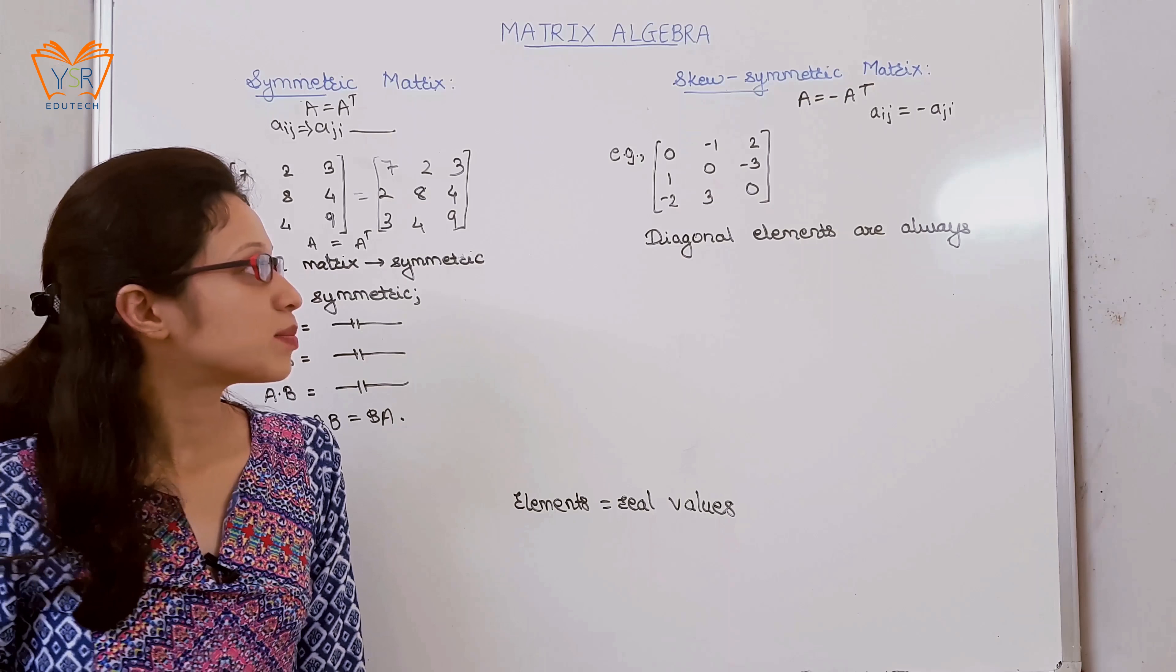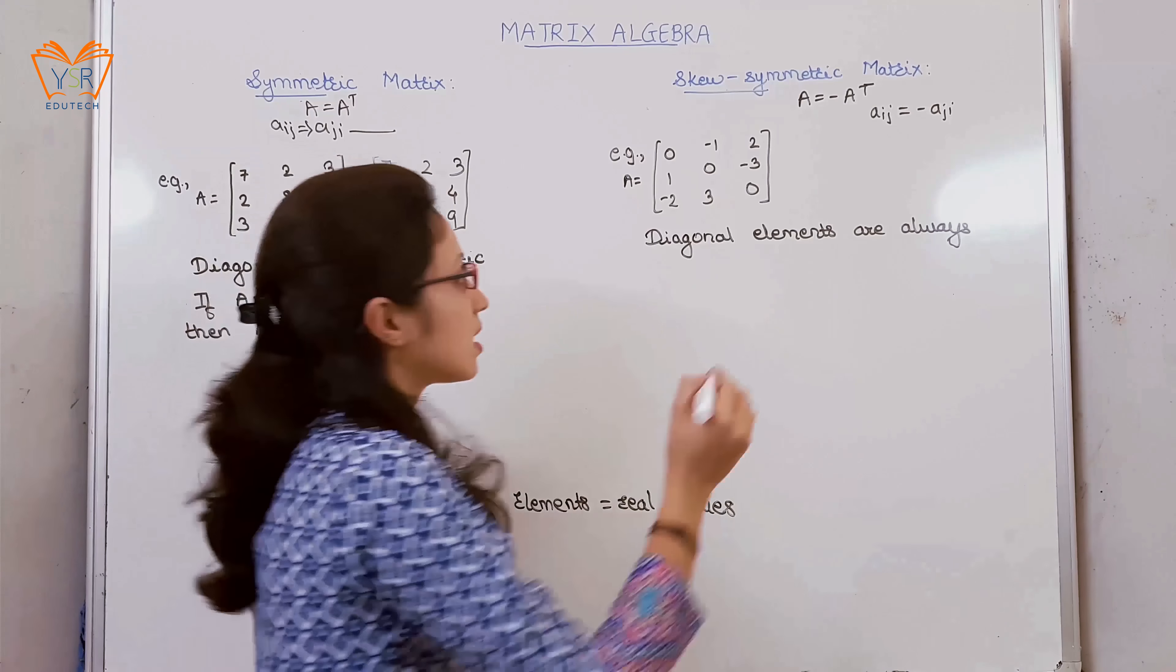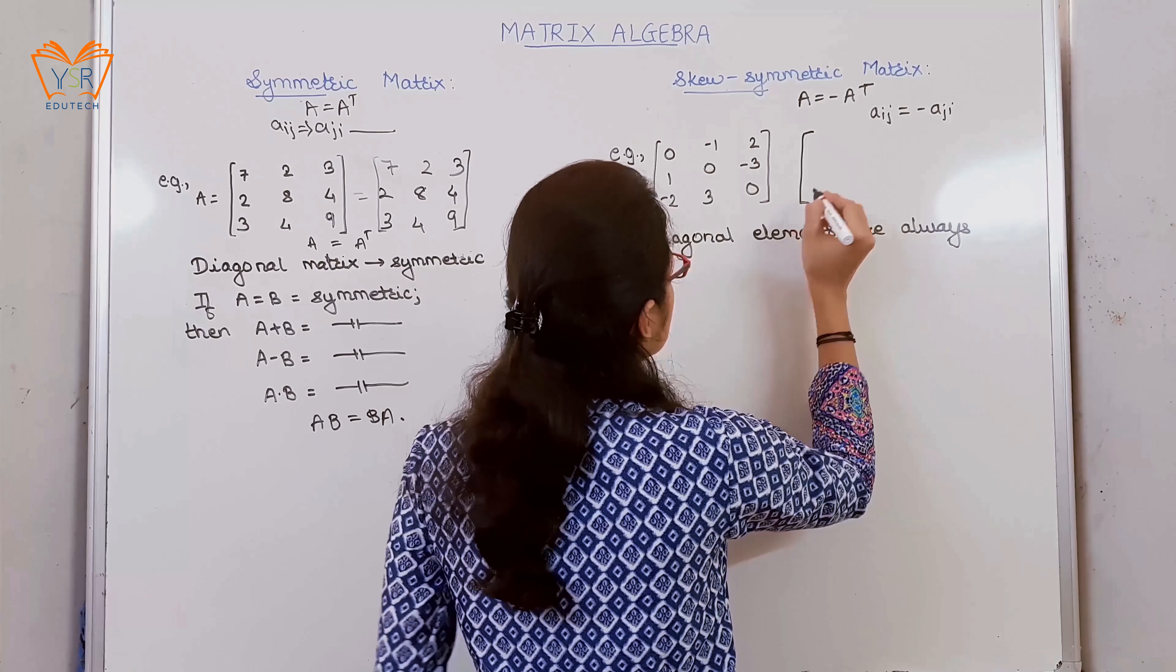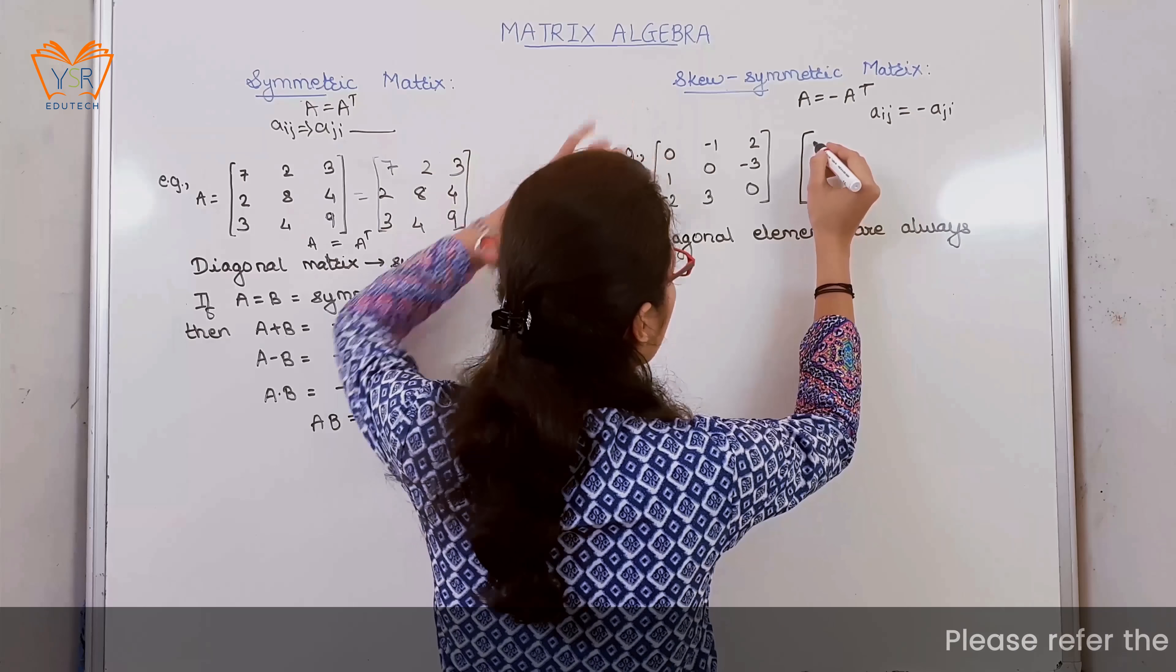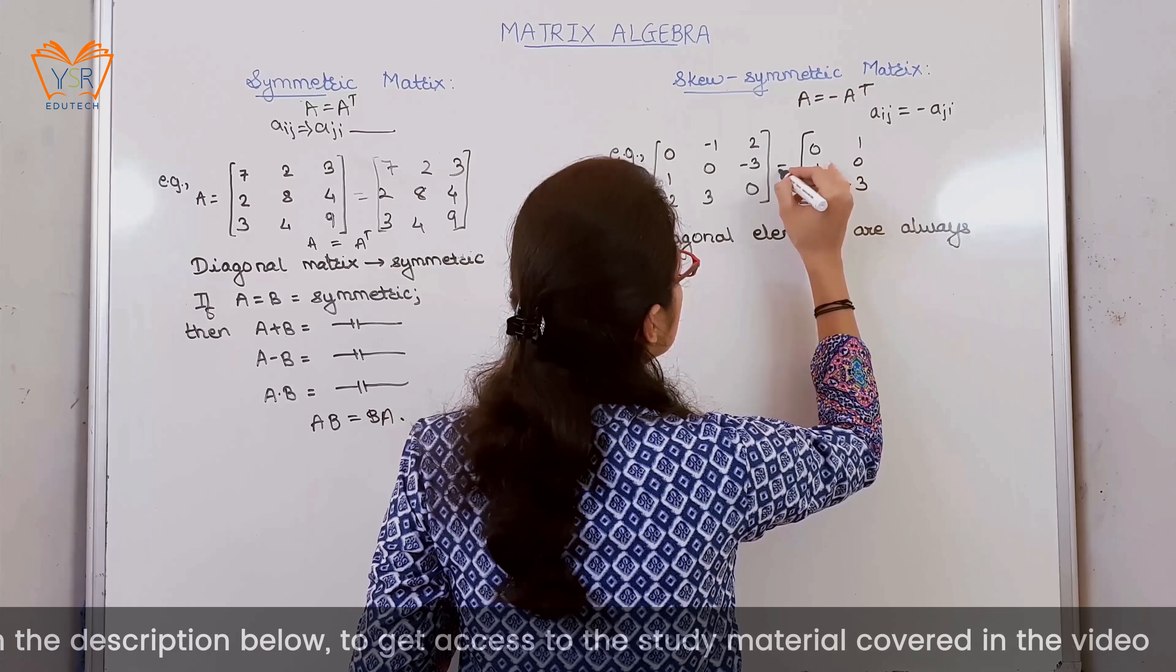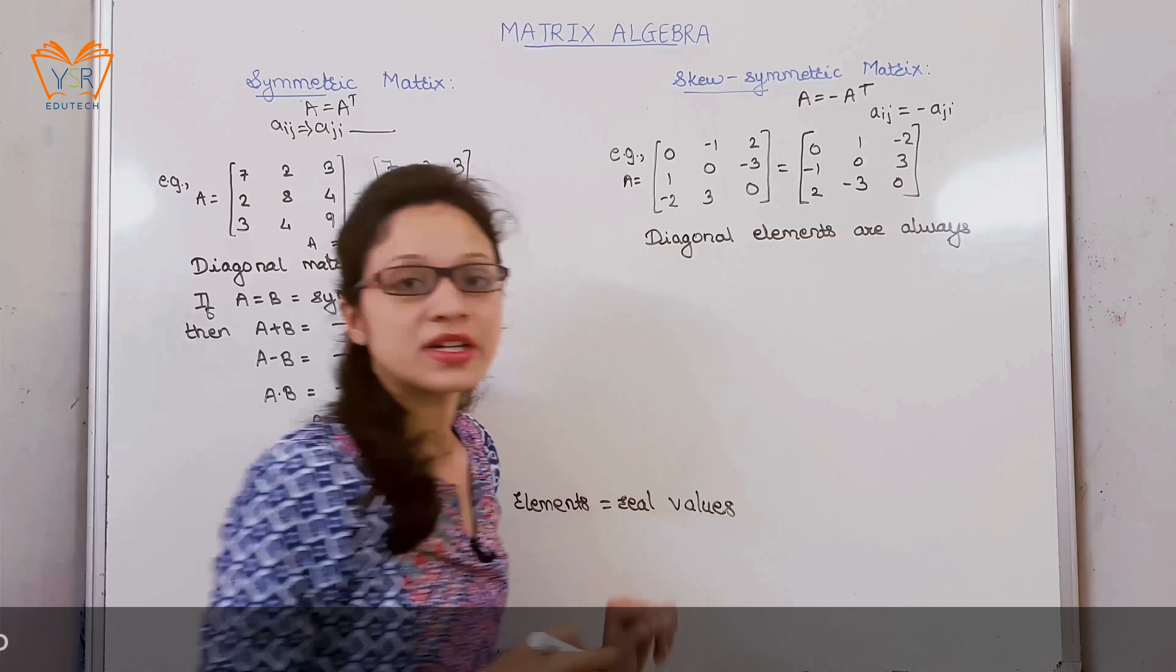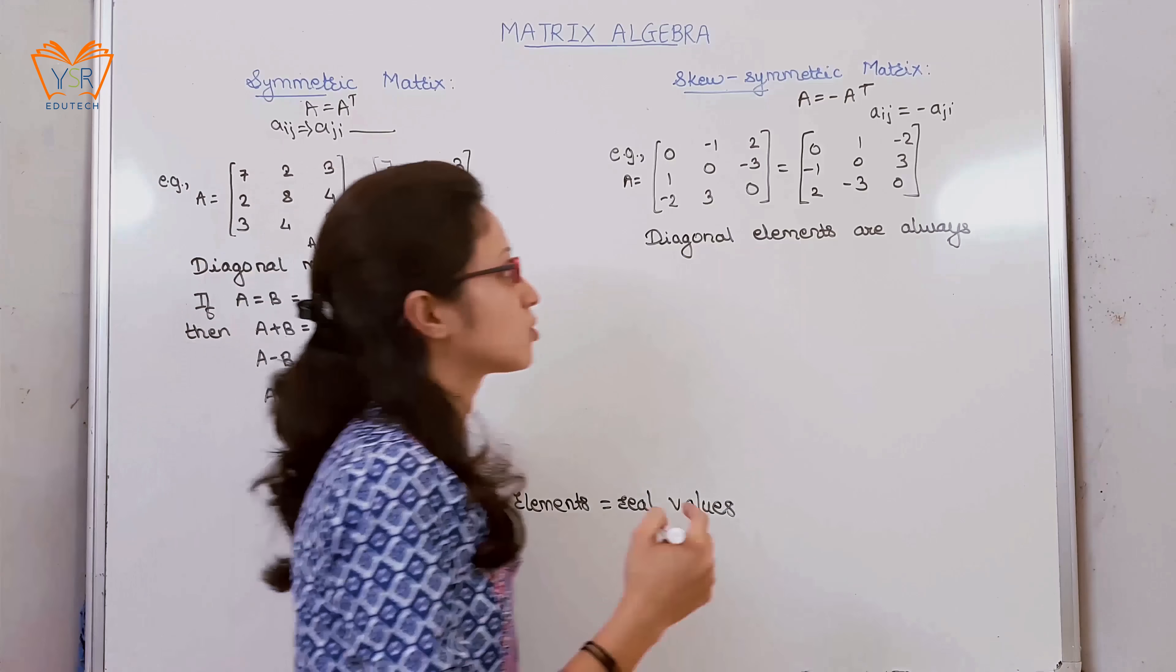Consider one example: if A is equal to a 3 by 3 matrix, again go for finding A transpose. Now find out the negative of that transpose.